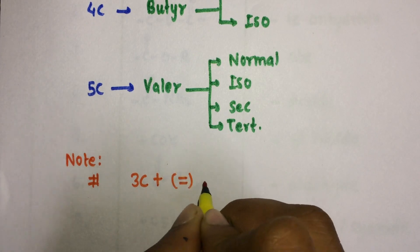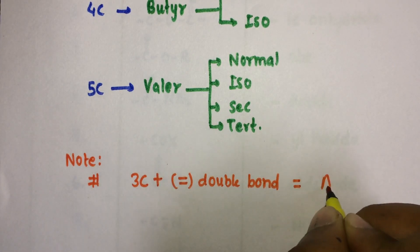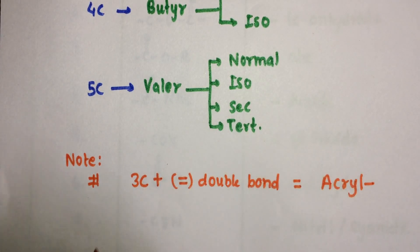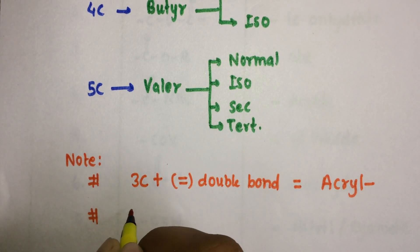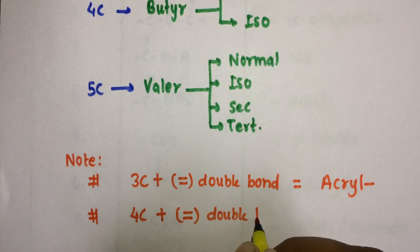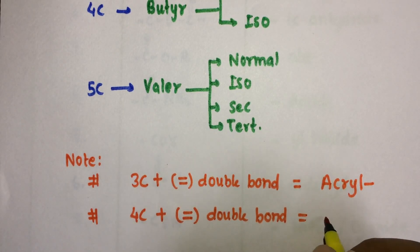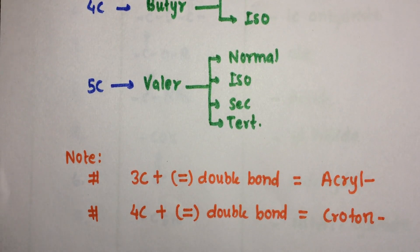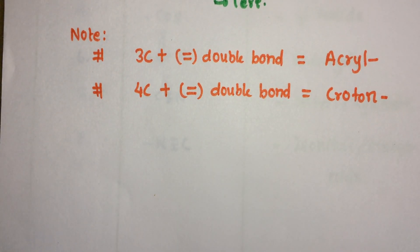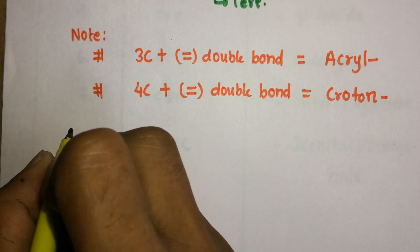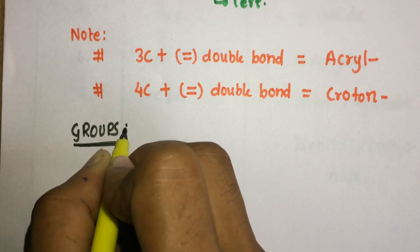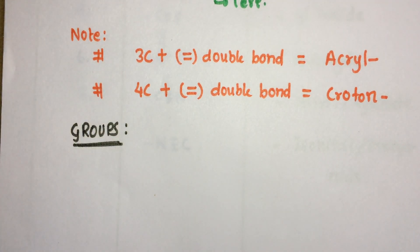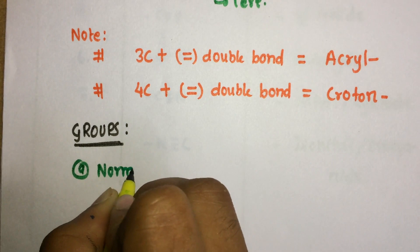Note: if there are three carbons in a carbon chain with a double bond, it is named 'acryl', and if it is four carbons with a double bond, it is named 'croton'.